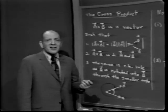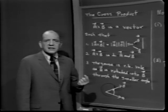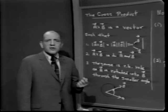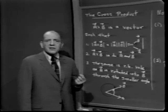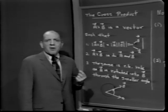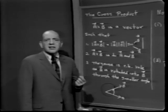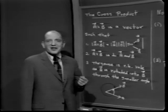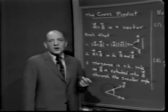To summarize the definition of the cross product: given two vectors, their cross product is a vector whose magnitude is the product of the two magnitudes times the magnitude of the sine of the angle between them. The cross product is perpendicular to each of the two vectors, and its sense is given by the right-hand rule as the first vector is rotated into the second through the smaller of the two angles.